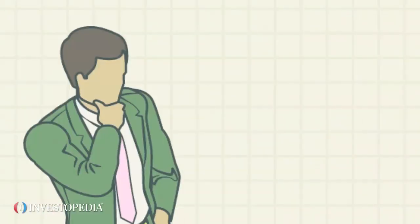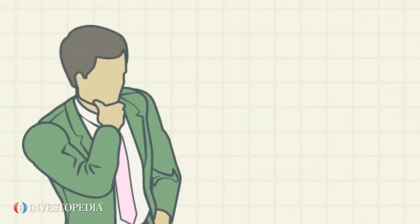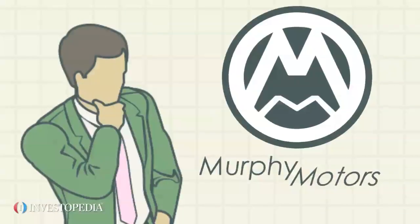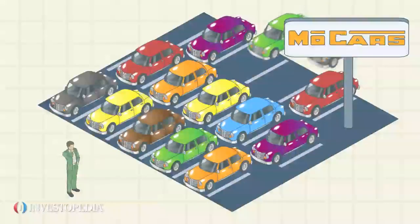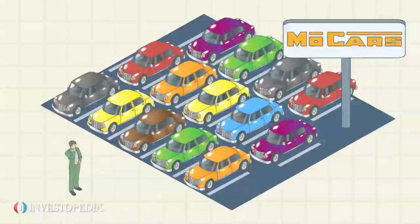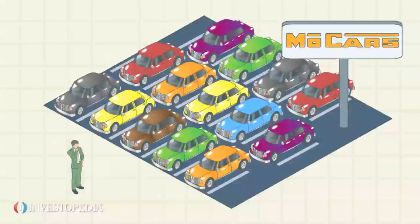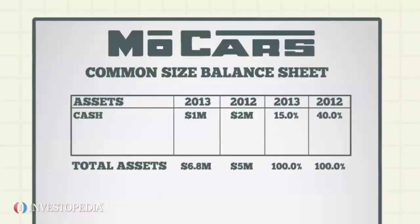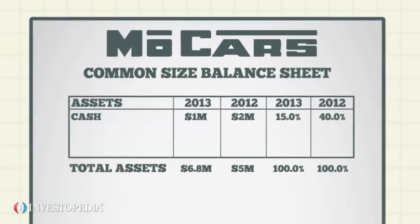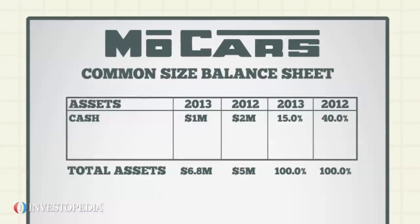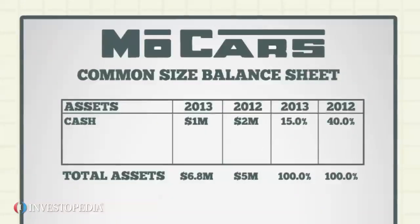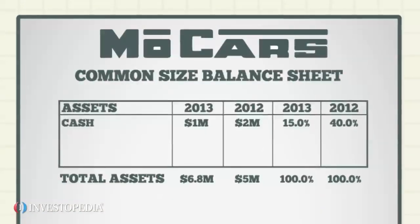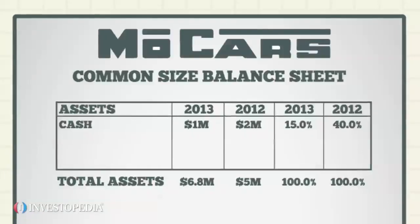For example, Casey, CEO of Murphy Motors, is trying to decide if his company should acquire MoCars, a growing luxury car brand. Casey compares MoCars' most recent Common Size Balance Sheet to its one from the same period the year prior.